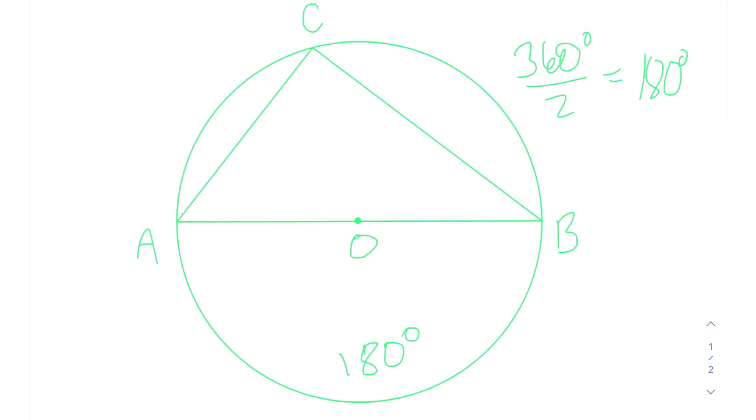And because ACB is also an angle inscribed in the circle O, we know that this angle must be 90 degrees because 90 degrees is half of 180 degrees.